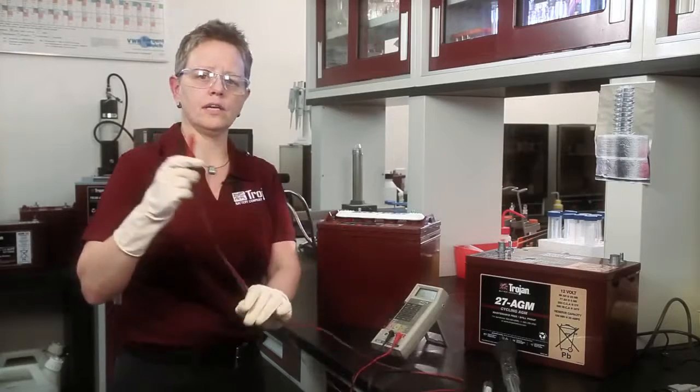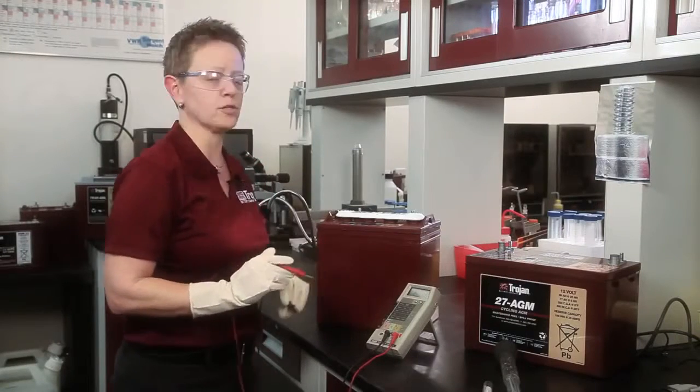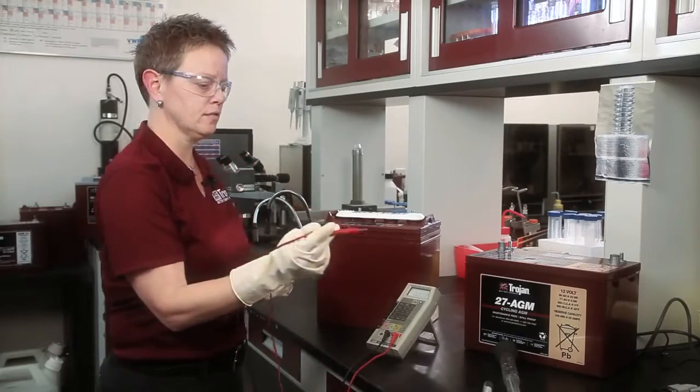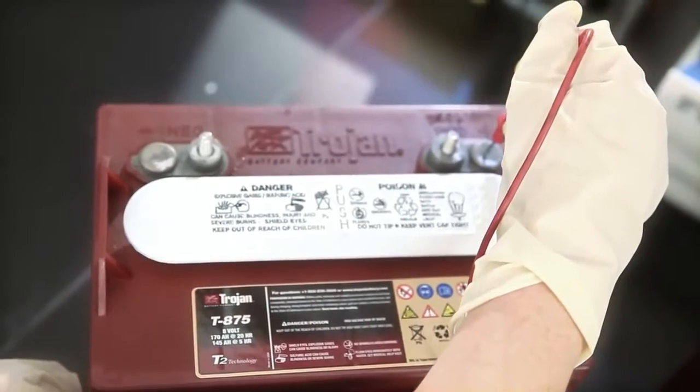All it takes to read the state of charge of your flooded battery is a voltmeter. Make sure that it is set to the proper voltage range for the battery type that you are measuring. This is an 8-volt battery. Take the positive probe from the voltmeter and connect it to the positive terminal on the battery.